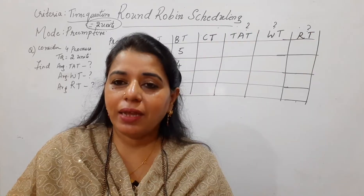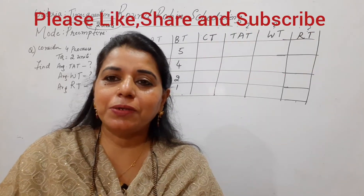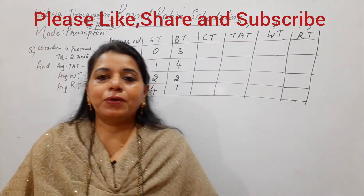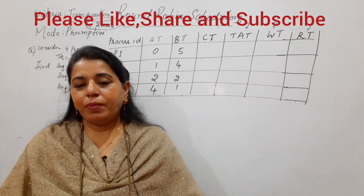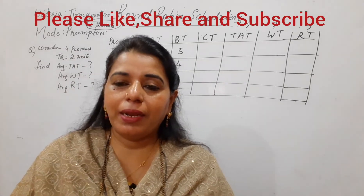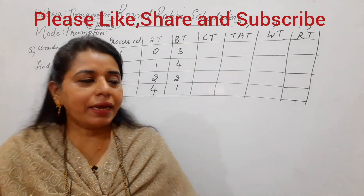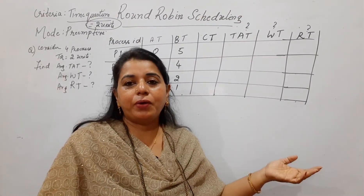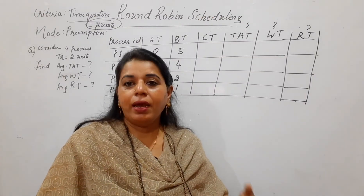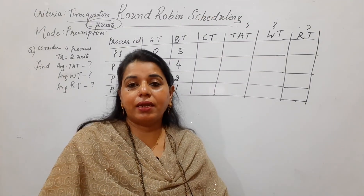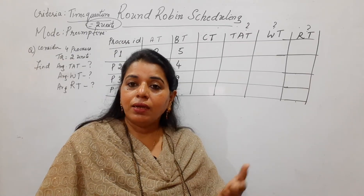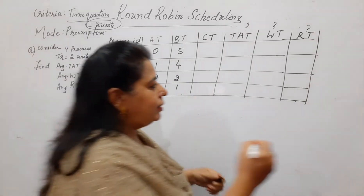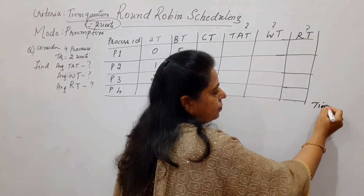Before I start this session, I request my viewers to like, share and subscribe to my channel. Before I start with the numerical, let me explain the logic for this round robin algorithm. The criteria here is a different one — previously you have seen the criteria as arrival time, and in SRTN the criteria was burst time. Here, the criteria is time quantum.